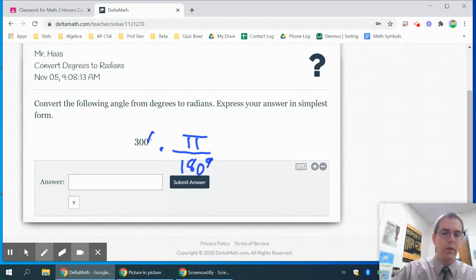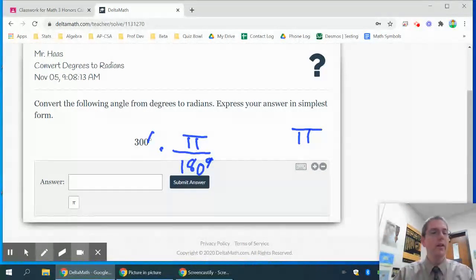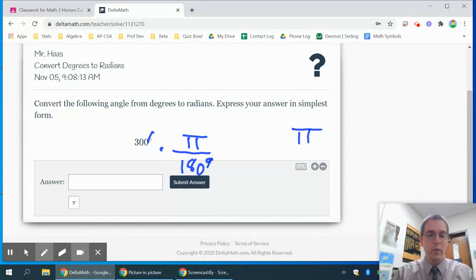So what I'm going to end up with is, since I want it in terms of π, I would need to just leave the π on my paper, meaning I don't put it in the calculator. So if you're using Desmos, you would do 300 divided by 180.